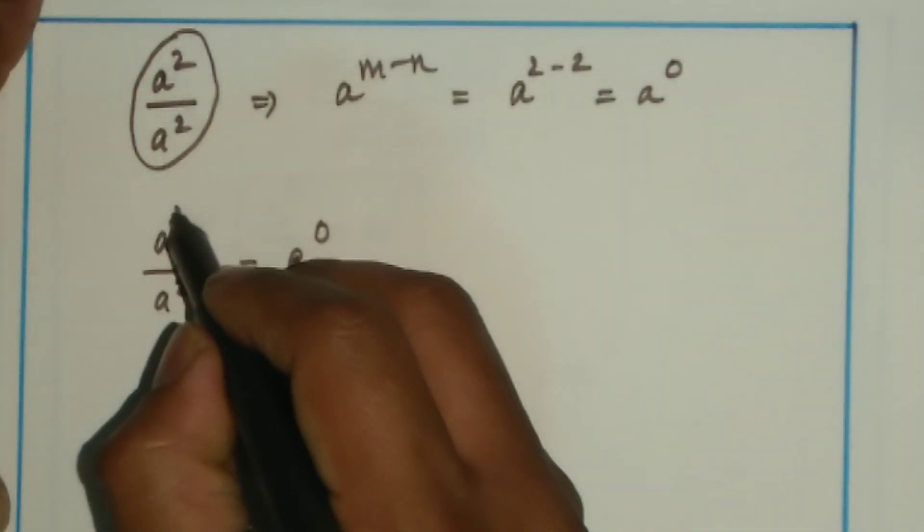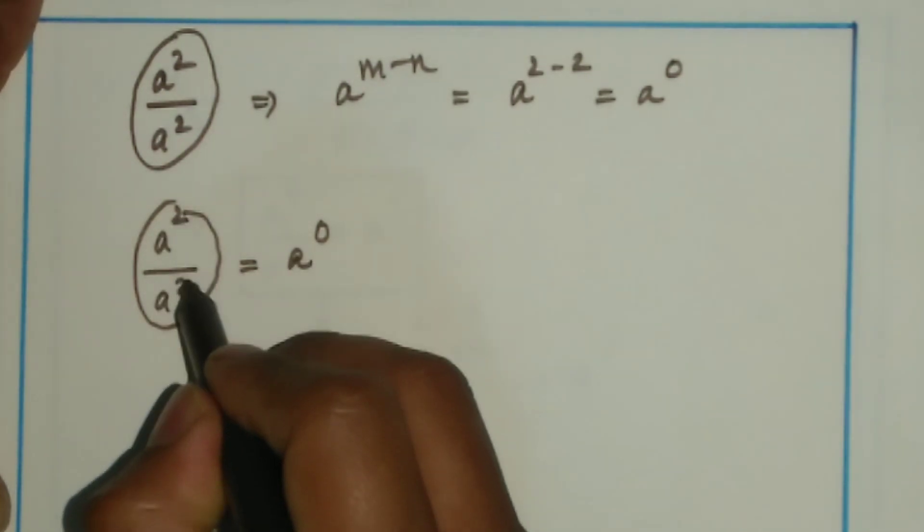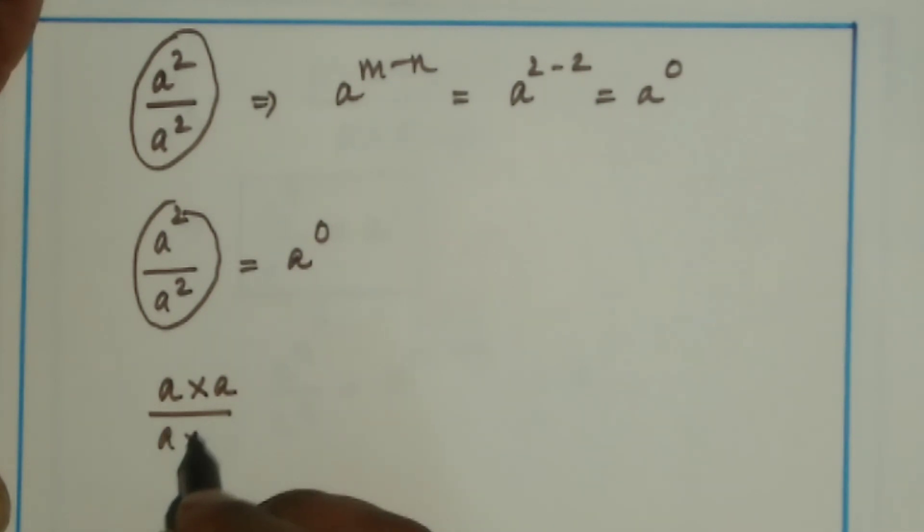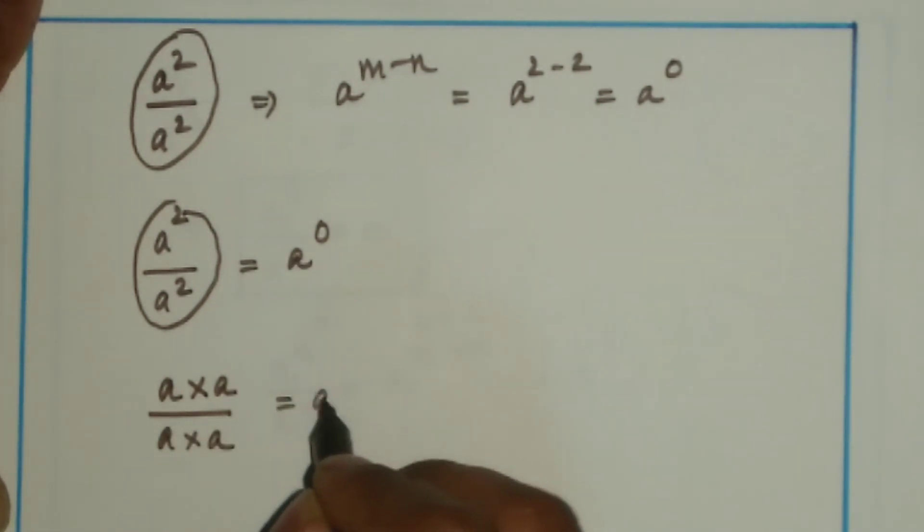Now, if I expand both the numerator and denominator, numerator will be a into a and denominator is a into a, and that is nothing but a power 0.